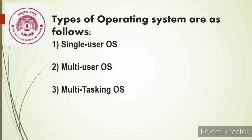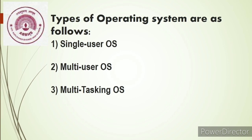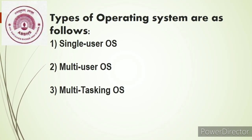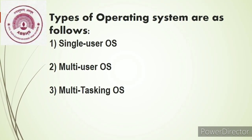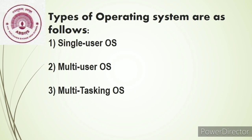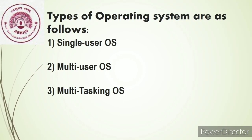Types of operating system: number one, single user operating system; number two, multi user operating system; and number three, multitasking operating system.